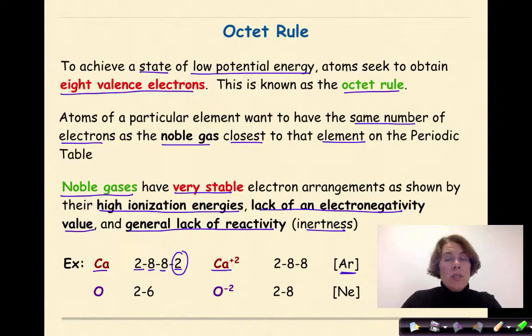Similar situation with oxygen. An oxygen atom has an electron configuration of 2-6. If it gains two electrons in this outermost shell, it becomes an oxygen ion with an overall charge of -2.